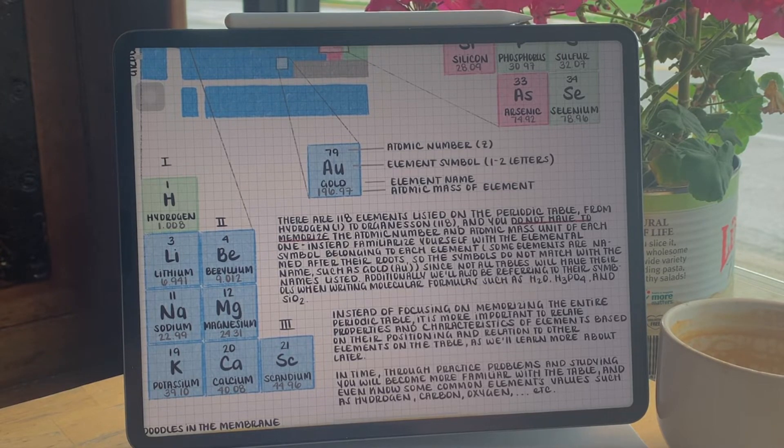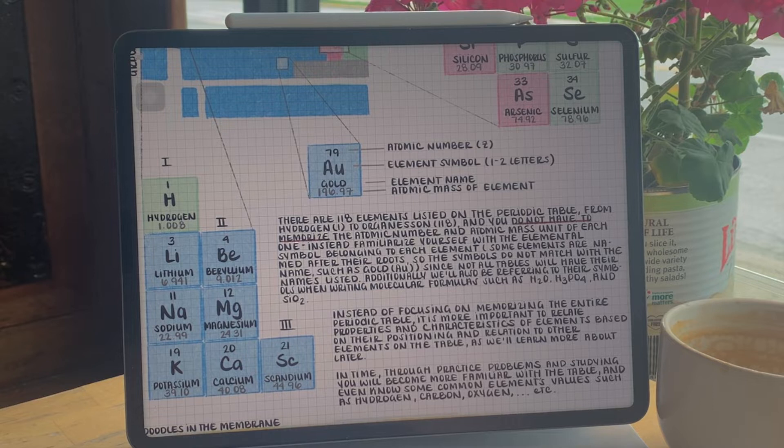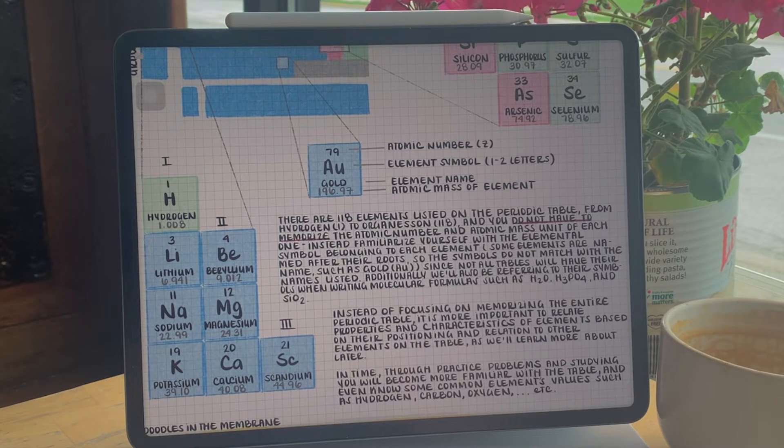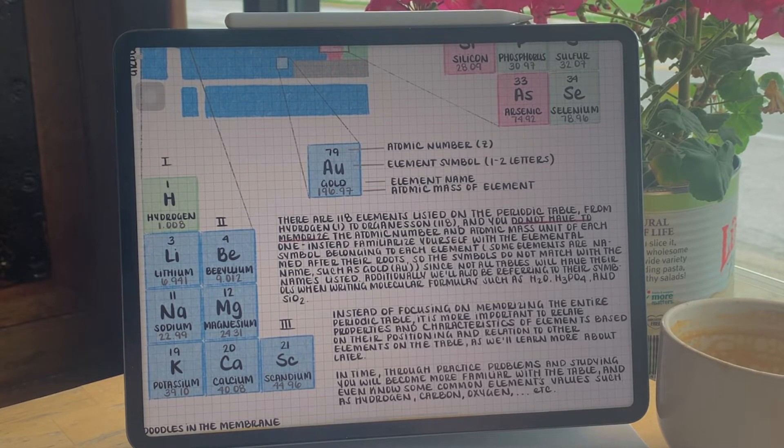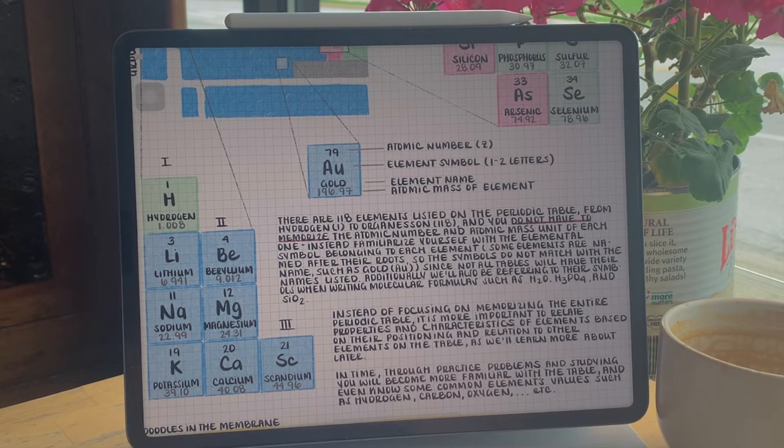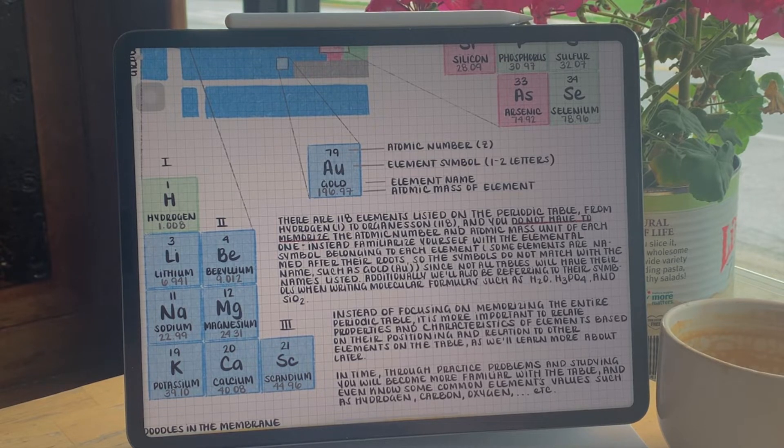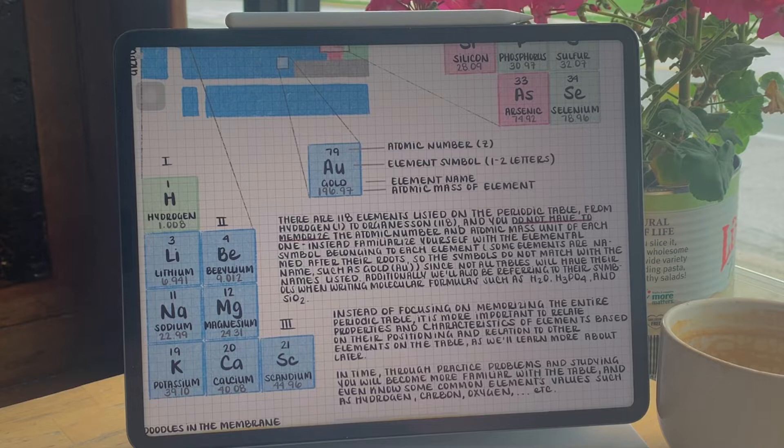Some elements are named after their roots, so the symbols do not match the names that we're used to, such as gold. Its symbol is Au. Since not all tables will have their names listed, it's a good idea to get it memorized.